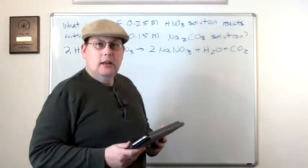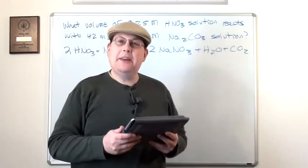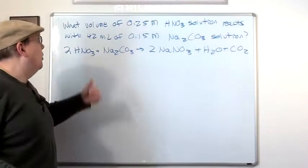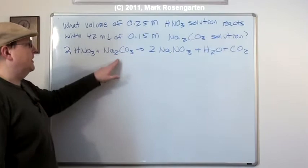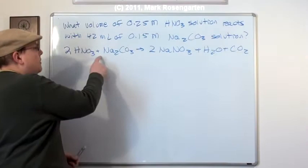This next question comes from Adam Eschel. Now, this one particular question is a very interesting one. What volume of 0.25 molar HNO3 solution, that's this, reacts with 42 milliliters of a 0.15 molar Na2CO3 solution, that's this? This is just a basic stoichiometry problem. You see, there's a 2 to 1 mole ratio of HNO3 to Na2CO3.